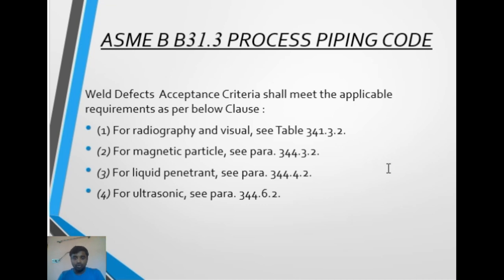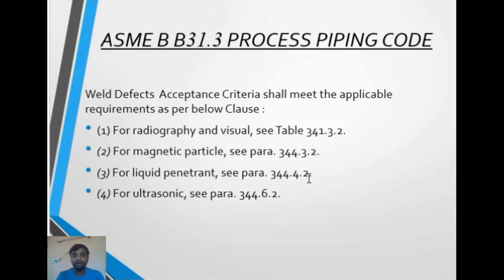For radiography and visual, refer to Table 331.3.2. For magnetic particle, see para 344.3.2. For liquid penetrant, see para 344.4.2. For ultrasonic, see para 344.6.2. These cover all defect acceptance criteria for B31.3. We'll go through them one by one, starting with radiography and visual — Table 341.3.